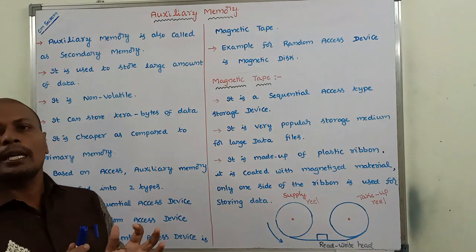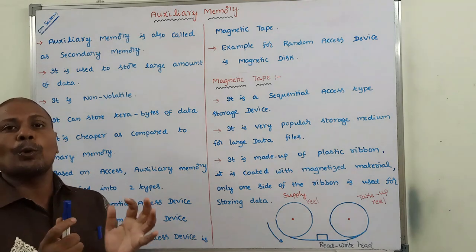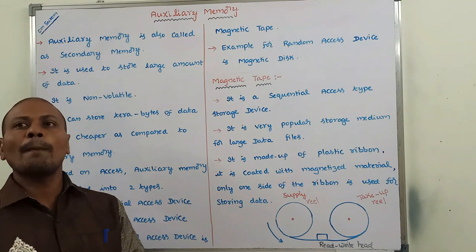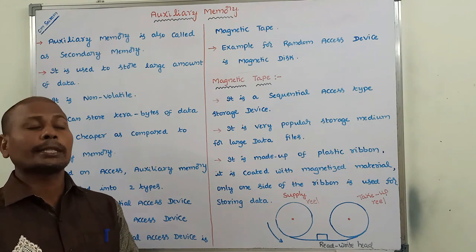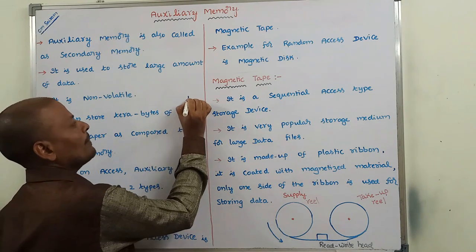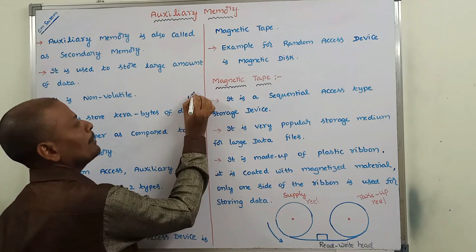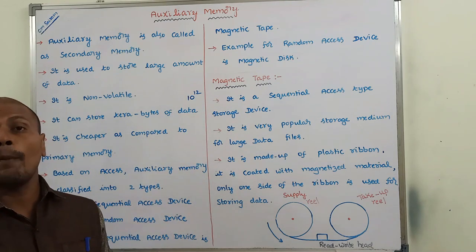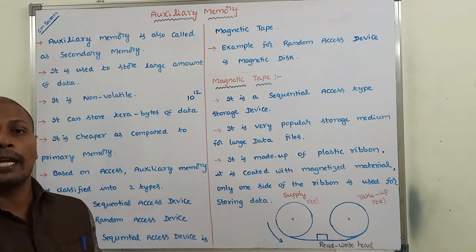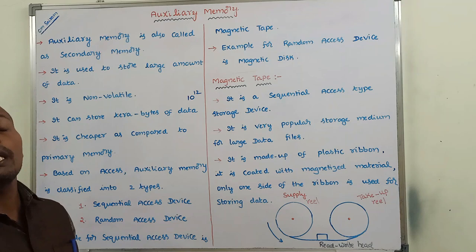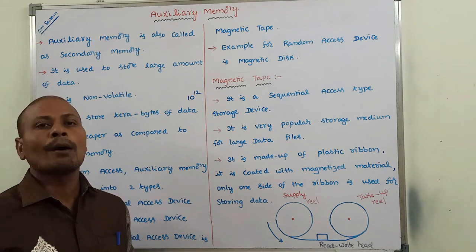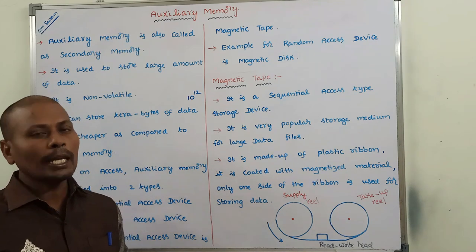Auxiliary memory can store terabytes of data. Terabytes of data means 10 to the power 12 — tera means 10 to the power 12. To store terabytes of data, we have to use a memory called auxiliary memory.